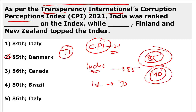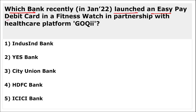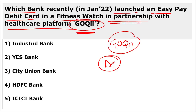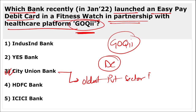Which bank recently launched an easy pay debit card in a fitness watch in partnership with healthcare platform GoQii? The answer is City Union Bank — City Union Bank, also known as the oldest private sector bank, partnered with GoQii to launch this debit card embedded in a fitness watch.